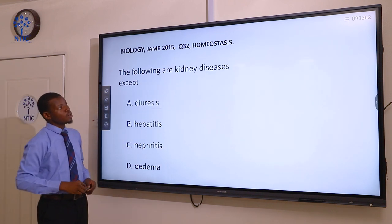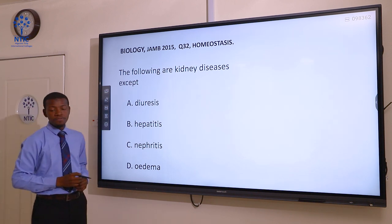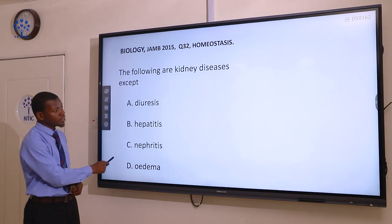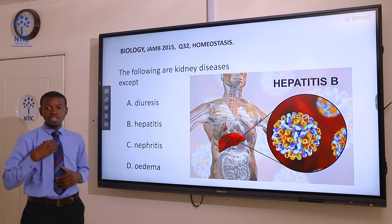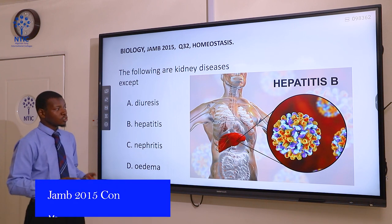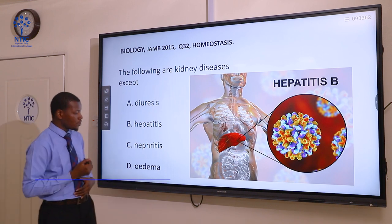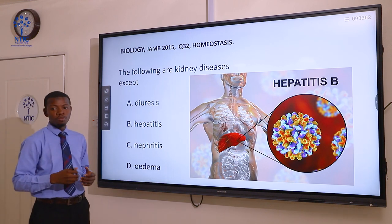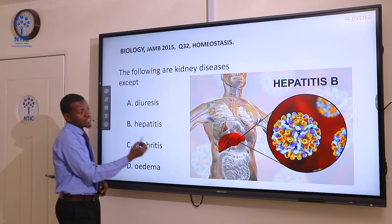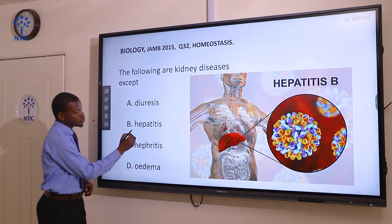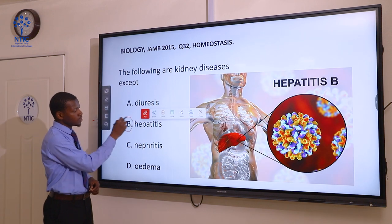Question 32. The following are kidney diseases except: A diuresis, B hepatitis, C nephritis, and D edema. Diuresis is whereby a person produces excess urine compared to normal. Nephritis is the infection of the kidney or nephron, and edema is when there is accumulation of body fluid in the body. Hepatitis is a disease that affects the liver and not the kidney. From the root word 'hepa' meaning liver, the correct answer here is B, hepatitis.